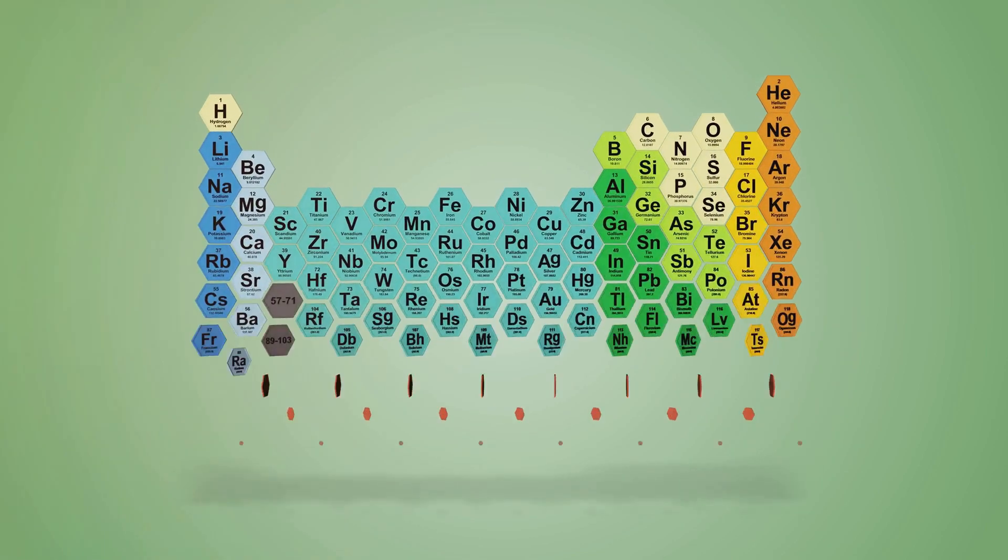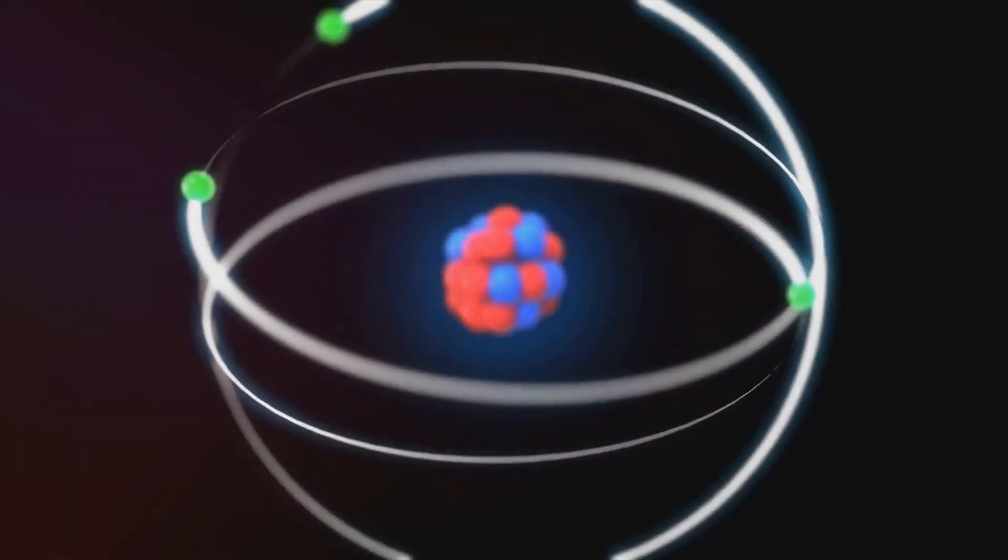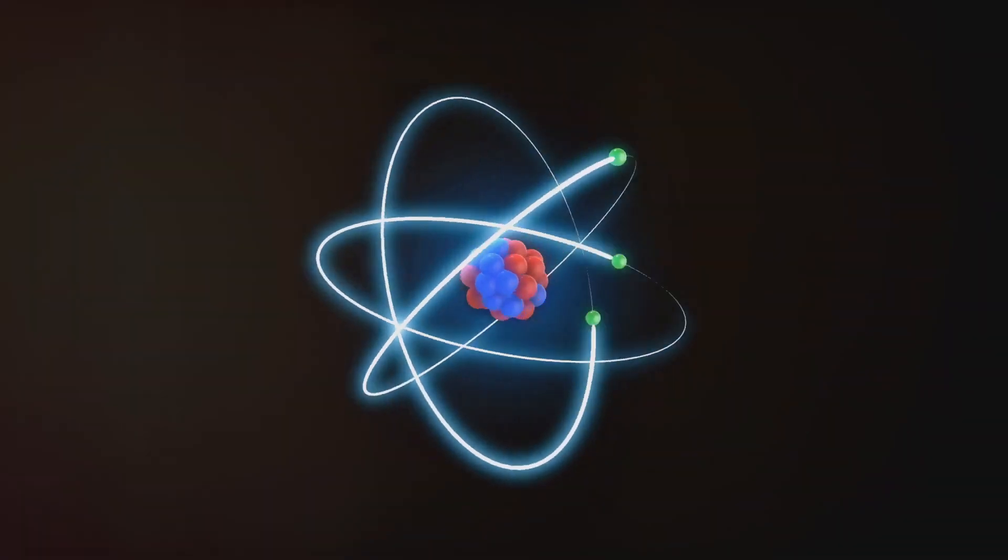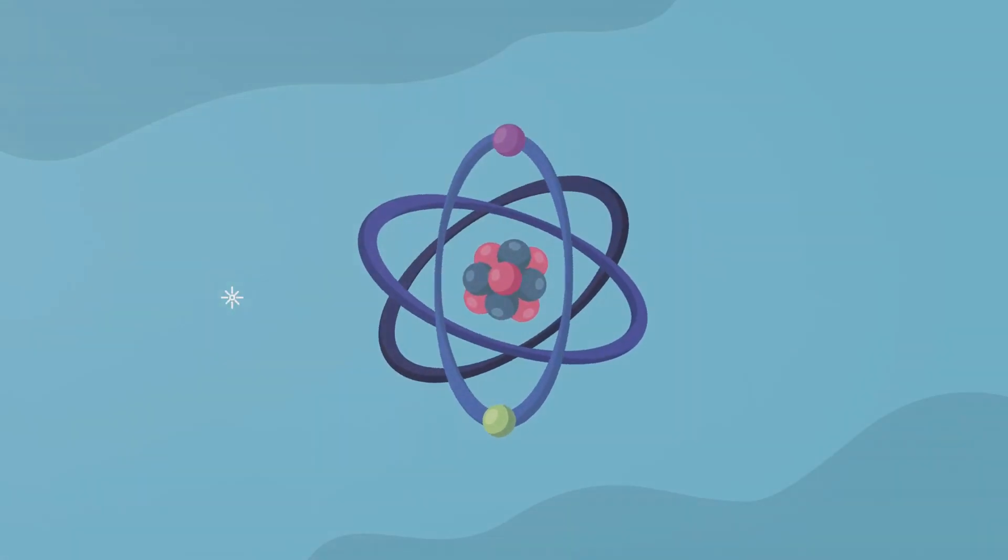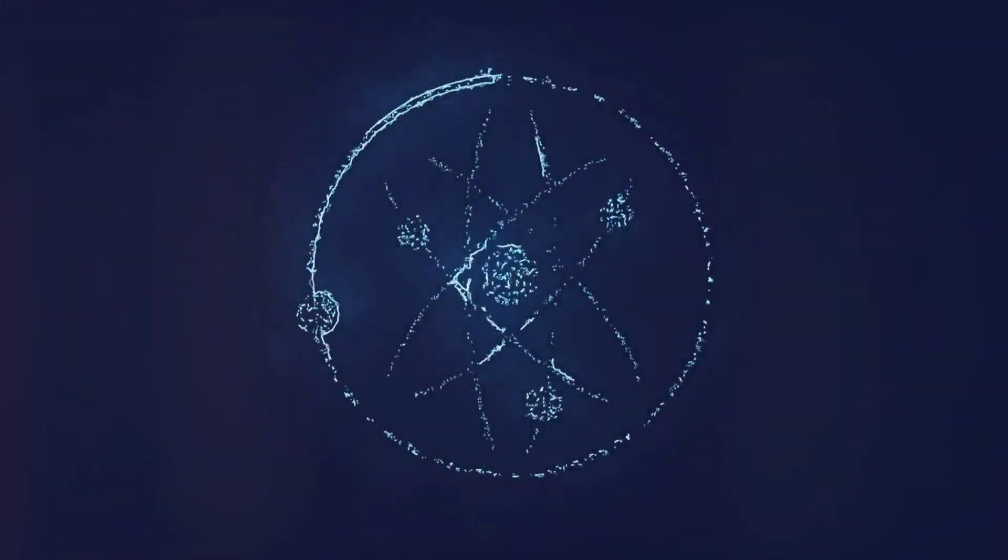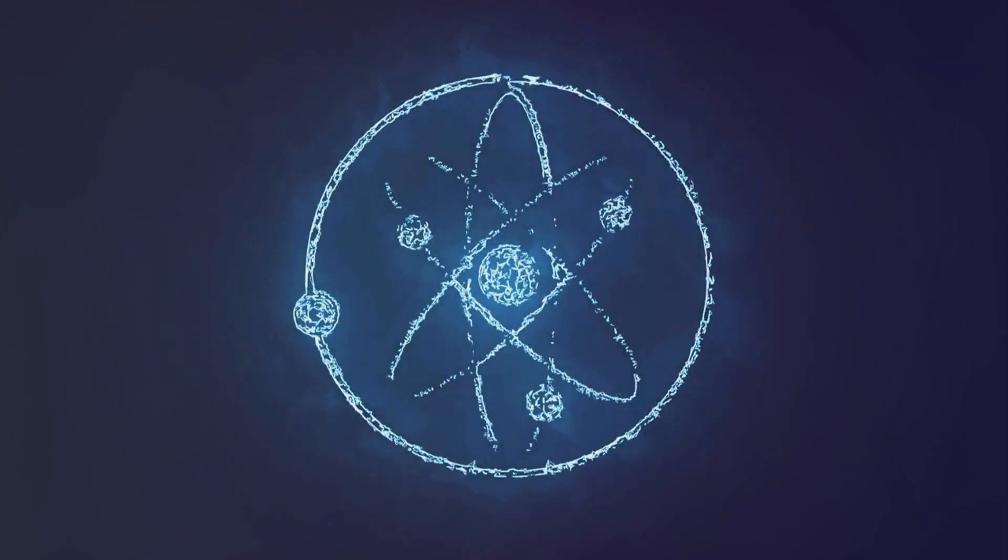To understand elements, it's crucial to first grasp the concept of the atom. An atom is the smallest unit of an element that retains the properties of that element. Picture it as a tiny solar system, with protons and neutrons at the center, or nucleus, and electrons whirling around in a cloud around them.